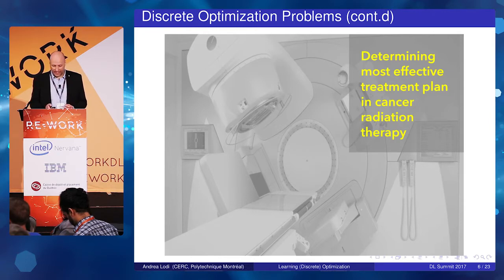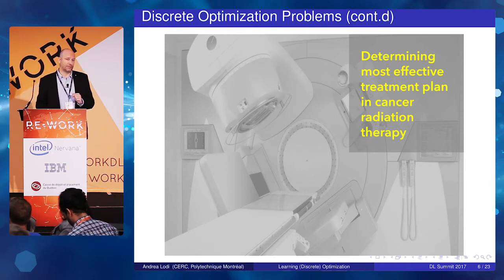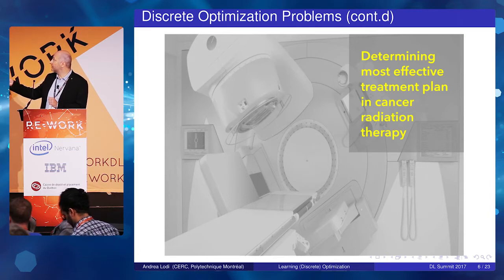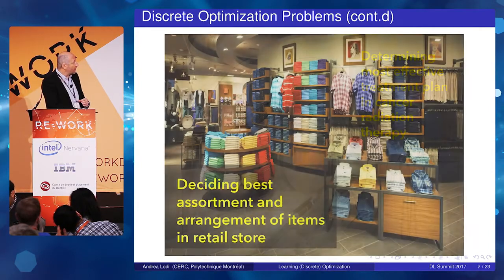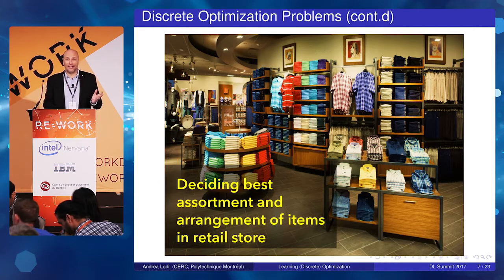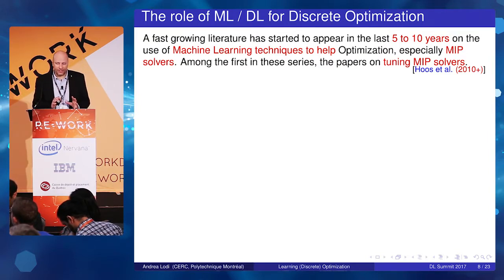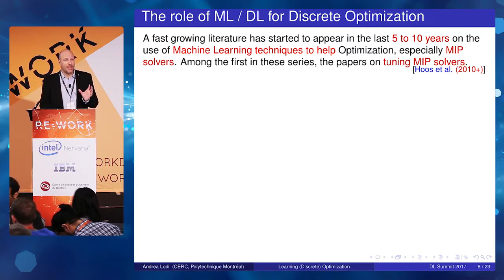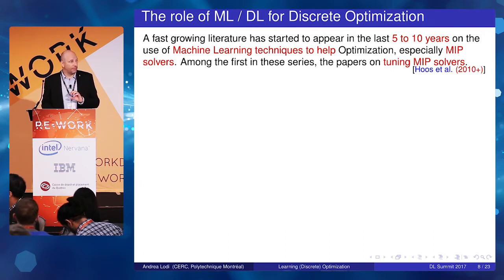We can use the same MIP approach across very different application contexts. One important example for social good is determining the most effective treatment plan in cancer radiation therapy. Another, more commercially driven example is assortment optimization over large datasets. The research area I'll discuss today focuses on the connection between machine learning and combinatorial optimization — specifically, what machine learning can do for discrete optimization.